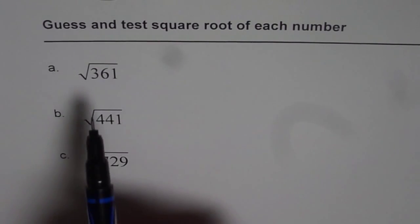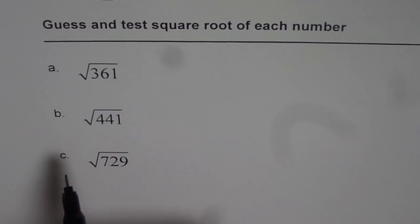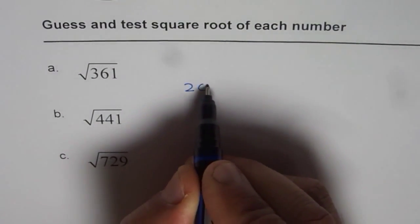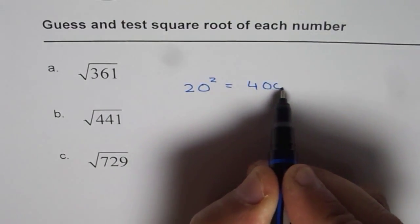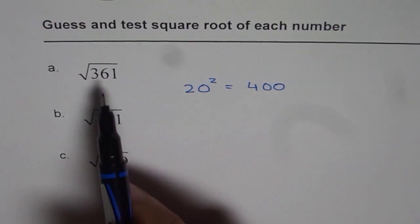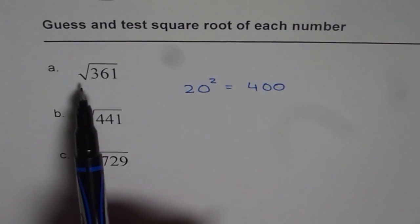361 is close to 400 and we know square of 20 is actually 400. Now you have two numbers here. First is square root of 361.